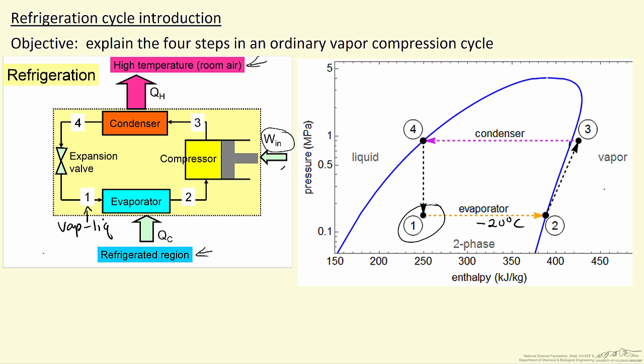We transfer heat and we evaporate the refrigerant. To this point we have a saturated vapor, and we can write an energy balance for this step, and it says delta H is equal to QC.